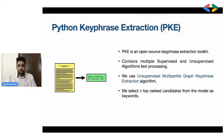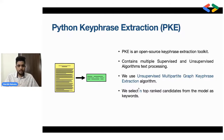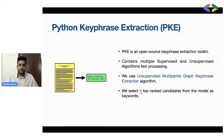The next module is Python Keyphrase Extraction, or PKE. PKE is an open source keyphrase extraction toolkit containing multiple supervised and unsupervised models. We're using an unsupervised multipartite graph keyphrase extraction algorithm. This algorithm takes the whole document or text and creates a multipartite graph that holds information about the whole document, separates topics and sentences, and uses the correlation between them to rank results as keyphrases. The result gives us top-ranked candidates which we pick as our keywords for distractor generation.